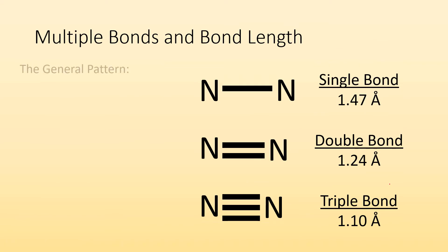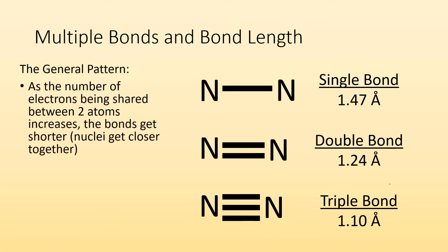So multiple bonds and bond length. The general pattern is as the number of electrons being shared between two atoms increases, the bonds get shorter or the nuclei get closer together. So single bonds are the longest because we're only sharing two electrons. And as you get down and move to triple bonds, they become the shortest. The more electrons being shared, the more tightly those atoms are bonded together. And you can see the bond lengths for a single bond, double bond, and triple bond decrease. And then I even had them shown to scale in the picture. So you can see how it decreases over time.